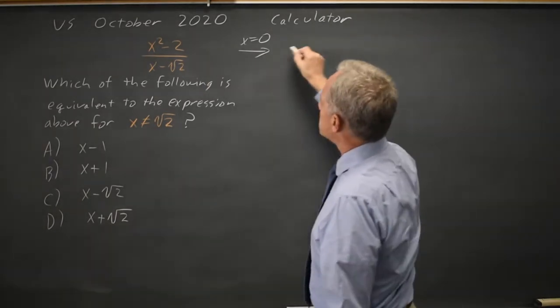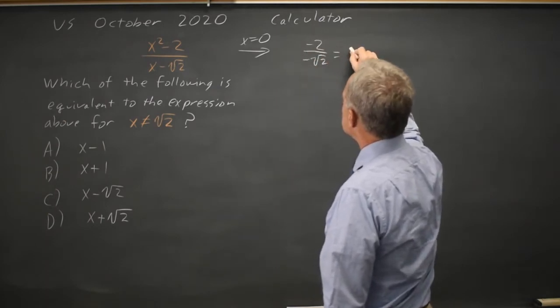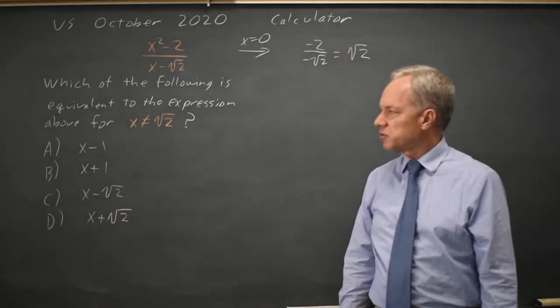With x equals 0, this becomes negative 2 over negative root 2, which is positive root 2. And you can check that on your graphing calculator if you need to.